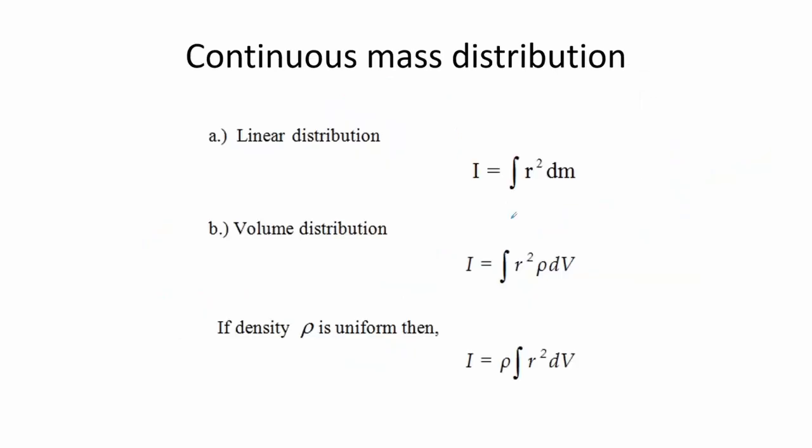For irregularly shaped objects we can calculate the moment of inertia using its integral form. If the material is linear but oddly shaped, we can use the linear distribution calculation. Similarly, for objects that have an irregular shape in three dimensions or have volume, we can use the expression where the density is factored out.